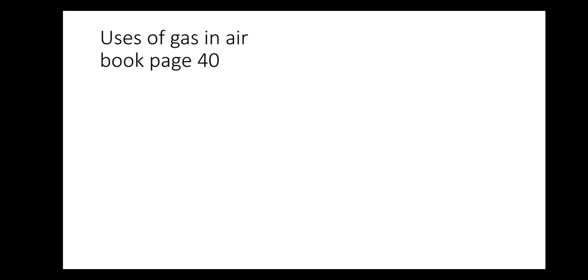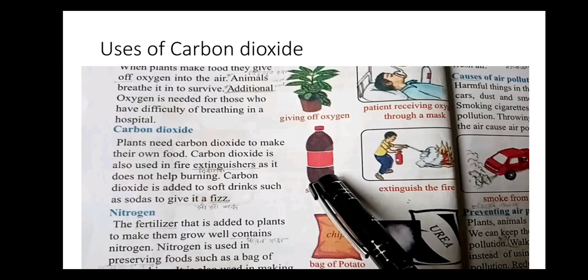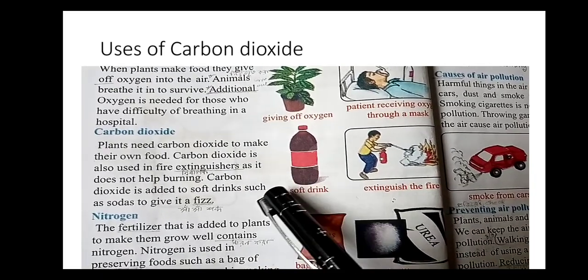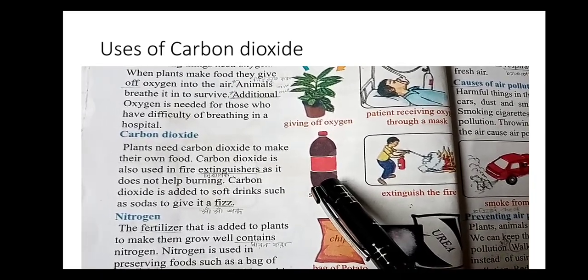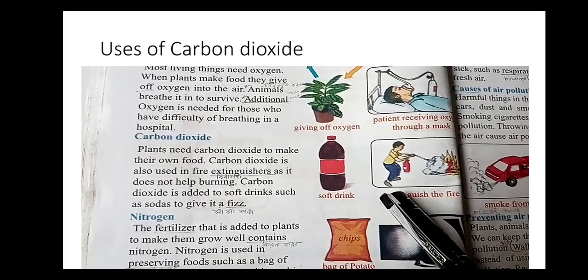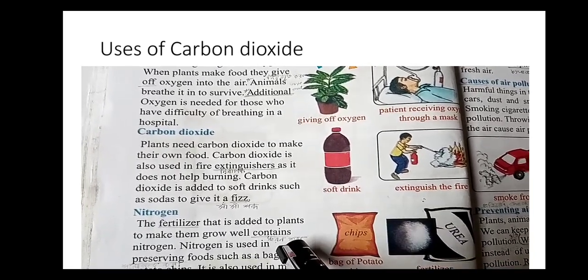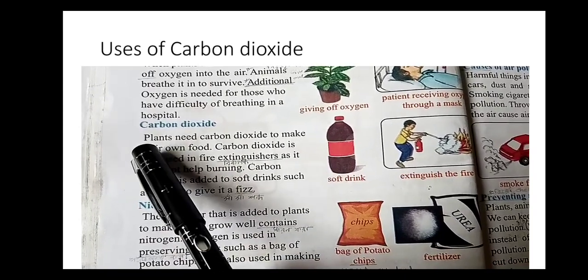You know that carbon dioxide is one of the components of air. Let's see what is written in your book, page 40. Here are two pictures. In the first picture it is a bottle of soft drink, and in the second picture a person is extinguishing fire. Let's see what is written here. Plants need carbon dioxide to make their own food.